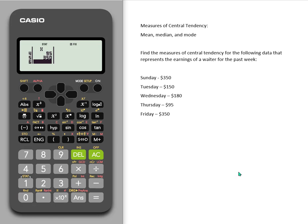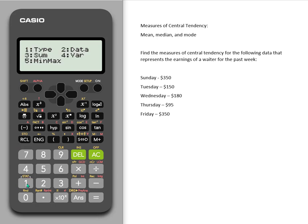To do calculations, I want to let the calculator know I'm done, so I'm going to hit All Clear first. Notice that brings me back to the main menu. Then I'm going to go into the Stat menu again — it's above the 1 key, in yellow. So that means hit Shift, then Stat.